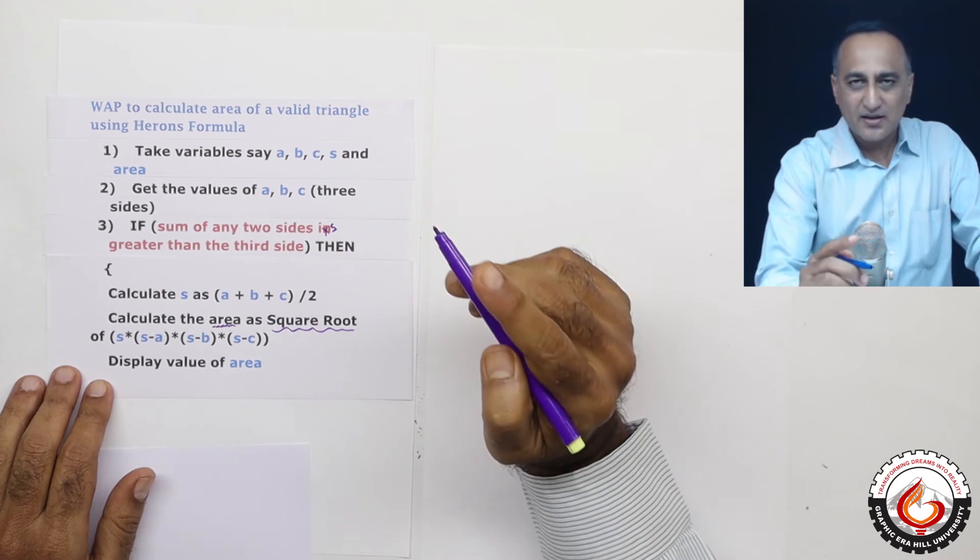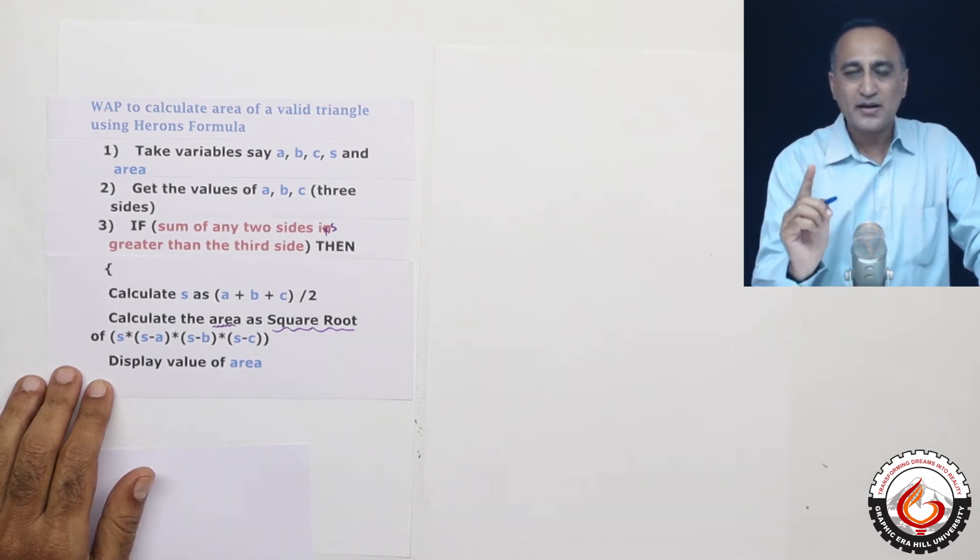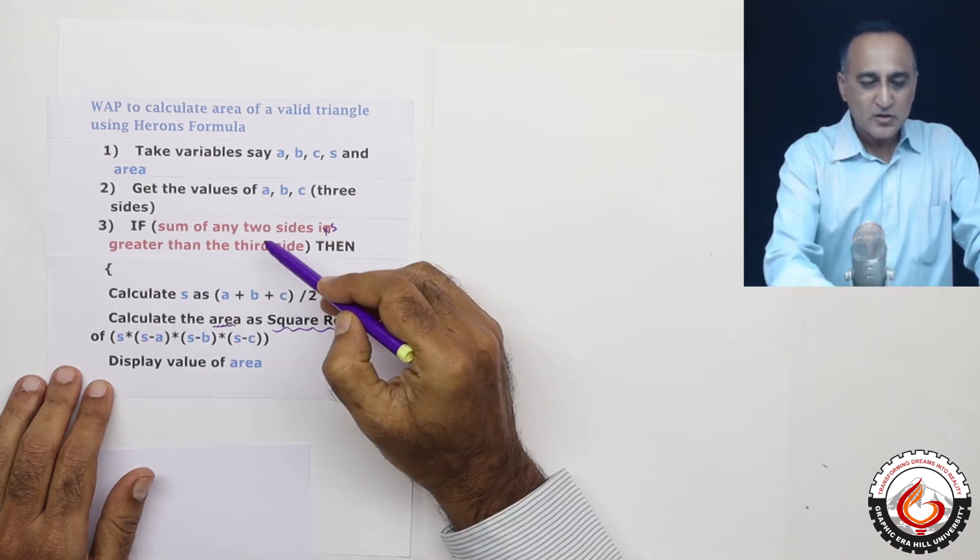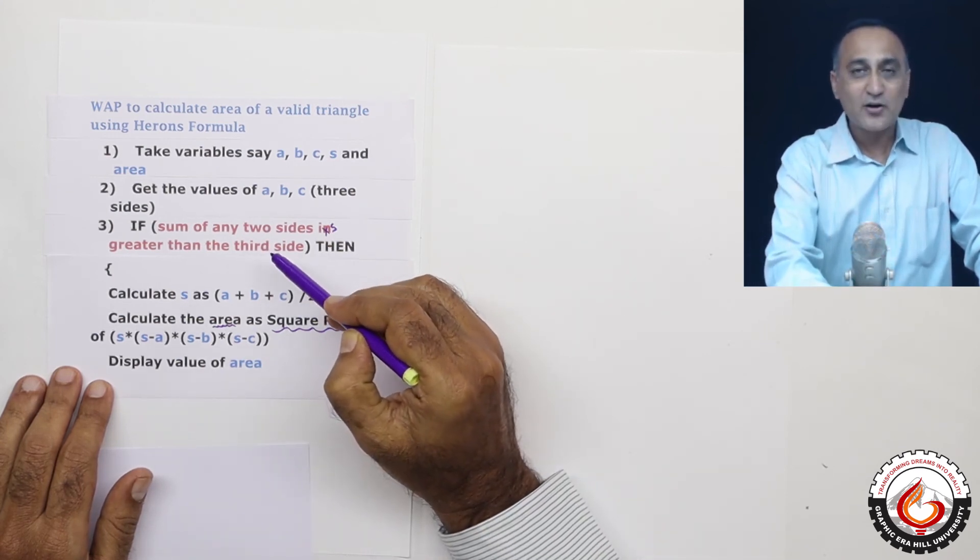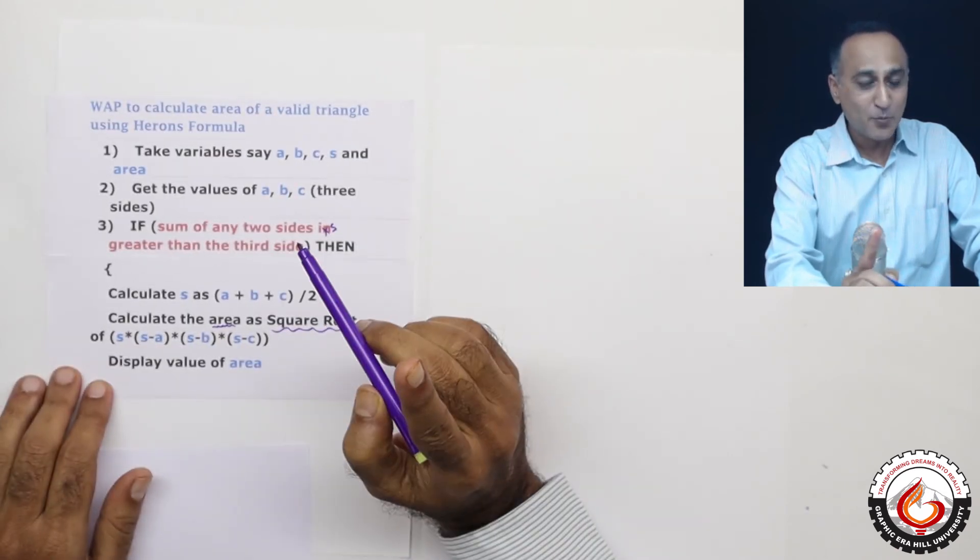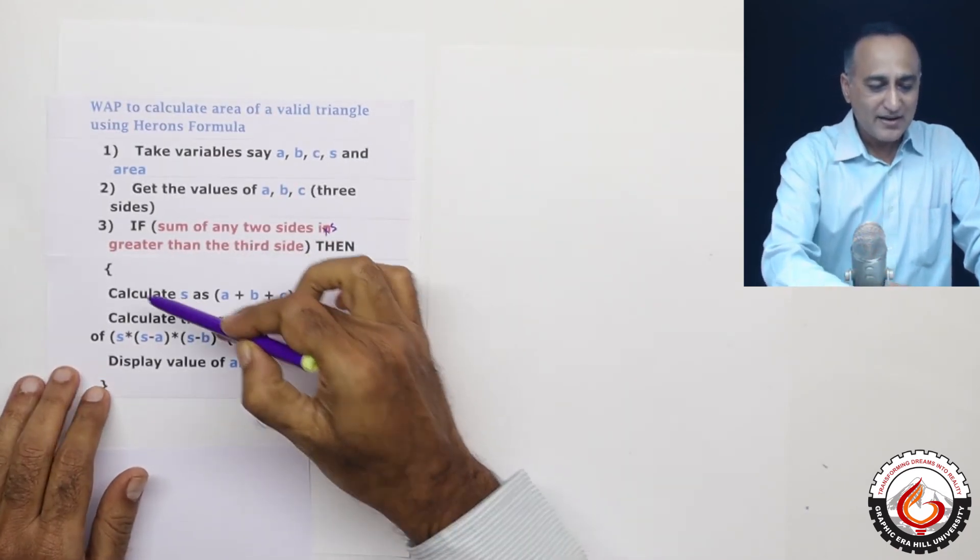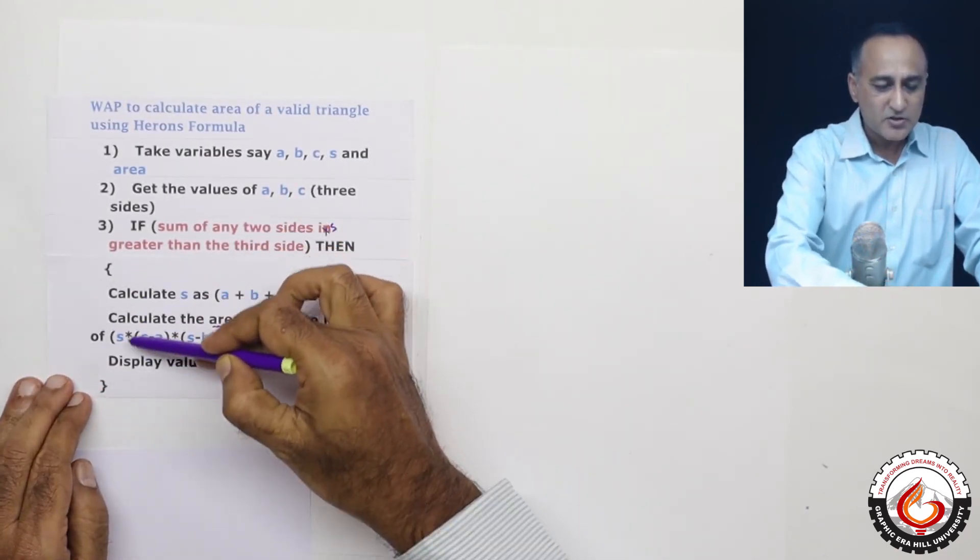This condition result or answer is going to be boolean. By the word boolean I mean it's either going to be true or false. So what I mean here is it's either going to be a valid triangle or an invalid triangle. It cannot be both. So if it's a valid triangle this particular calculation is going to happen.